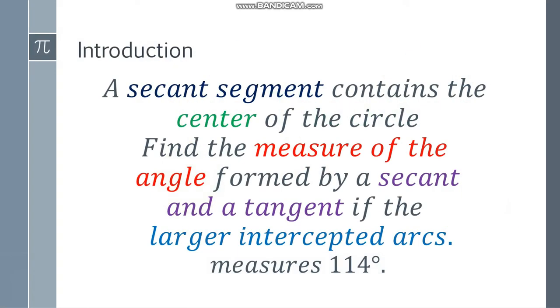So here is the question. A secant segment contains the center of the circle, find the measure of the angle formed by a secant and a tangent, if the larger intercepted arcs measures 114 degrees.